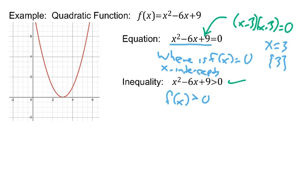So, for the inequality, you'd actually have to say that the solution set is negative infinity to 3, don't include the 3, and then 3 to infinity, again, don't include the 3.